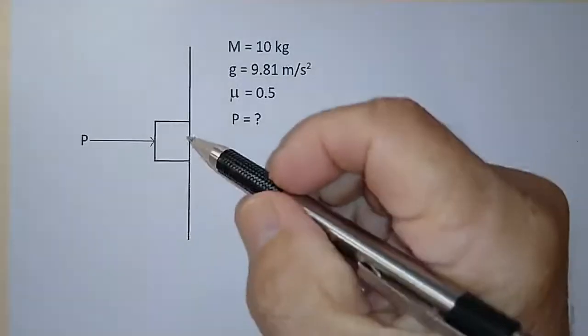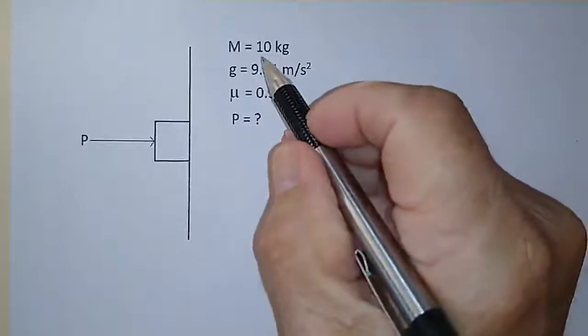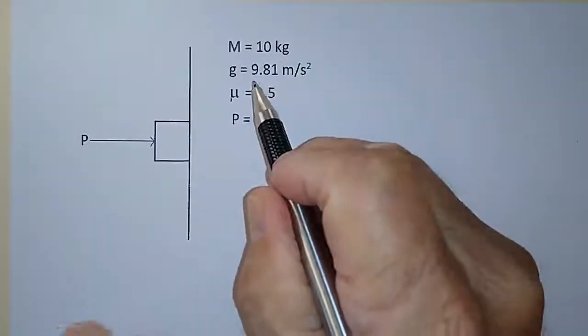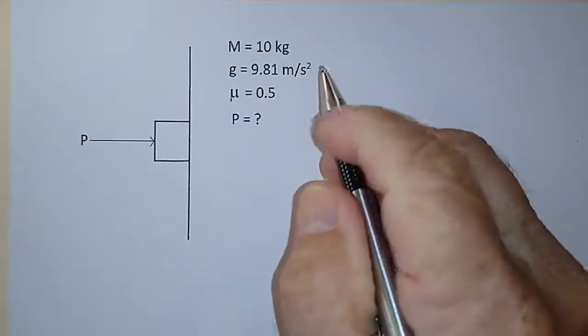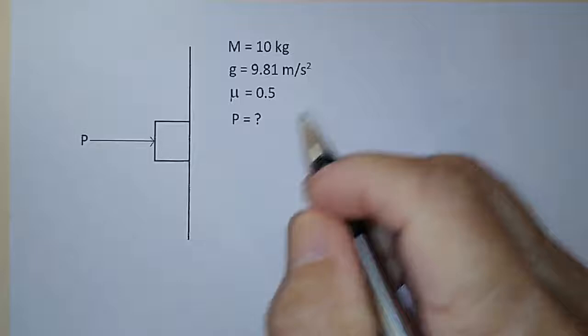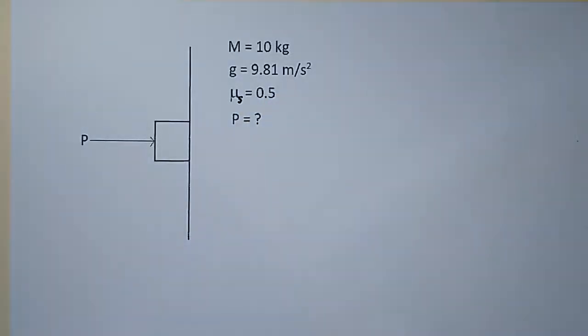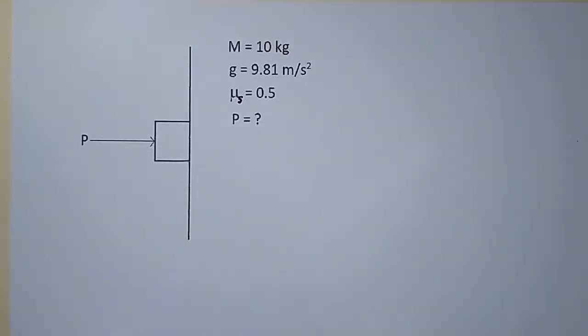Let's say you have a box pushed up against a wall and the mass of the box is 10 kilograms, acceleration due to gravity is 9.81 meters per second squared, and the coefficient of static friction, mu sub s, is 0.5. The question is, how much does the push force P have to be in order that the box doesn't move, just the minimum amount?